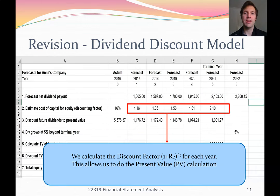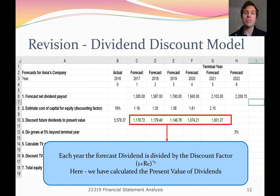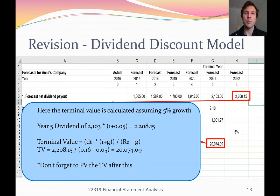The next row contains the discount factors: for each year, one plus RE — the cost of equity capital — raised to the power of the number of time periods. So in year one it's one plus 16% to the power of one; in year two, one plus 16% to the power of two; and so on for all five years. The row after that calculates the present value of each dividend by taking the dividend for each year and dividing it by that year's discount factor. The final thing to consider is the terminal value.